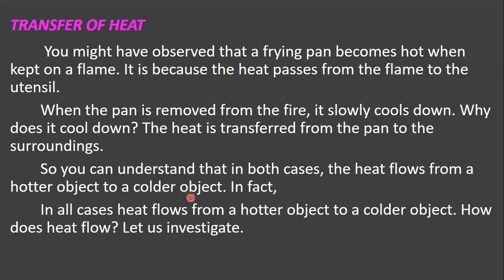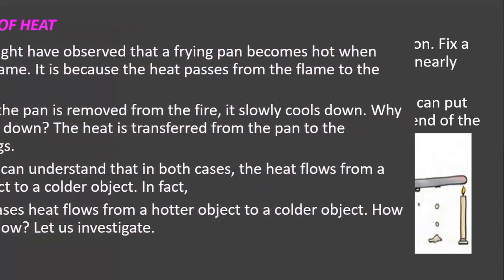In both cases — the pan heating up and cooling down — the heat flows from the hotter object to the colder object. In the first case, heat transferred from the flame to the frying pan. In the second case, heat transferred from the frying pan to the surroundings. In all cases, heat flows from the hotter object to the colder object. Now how does this heat flow? Let us find out.